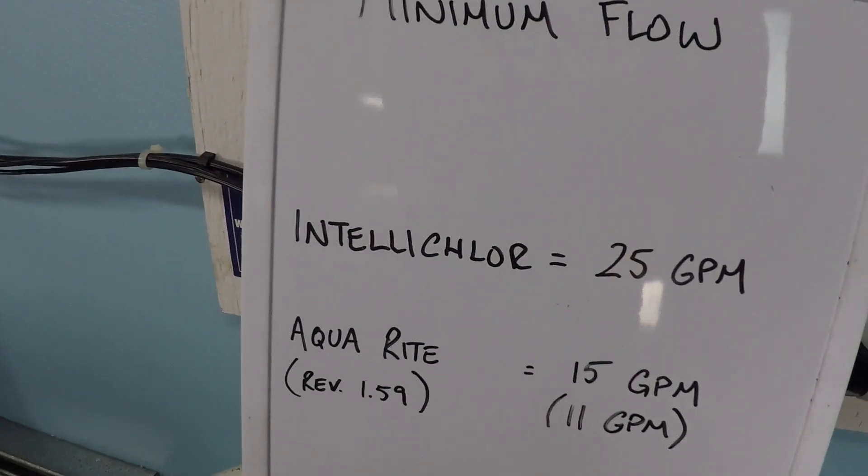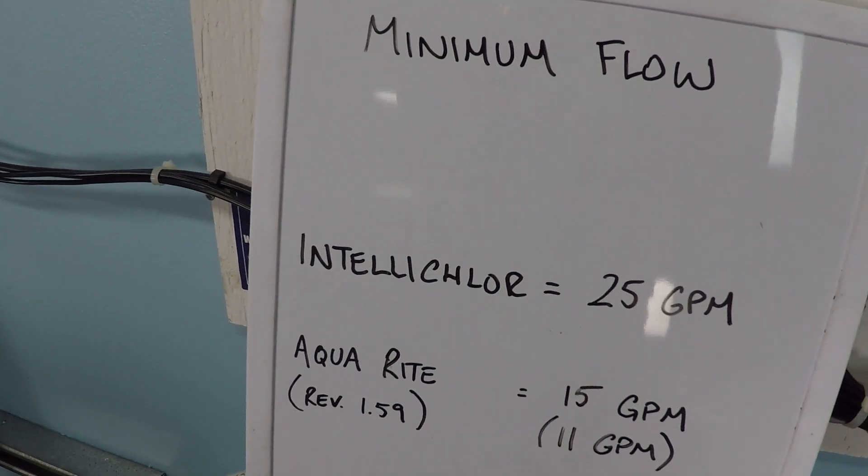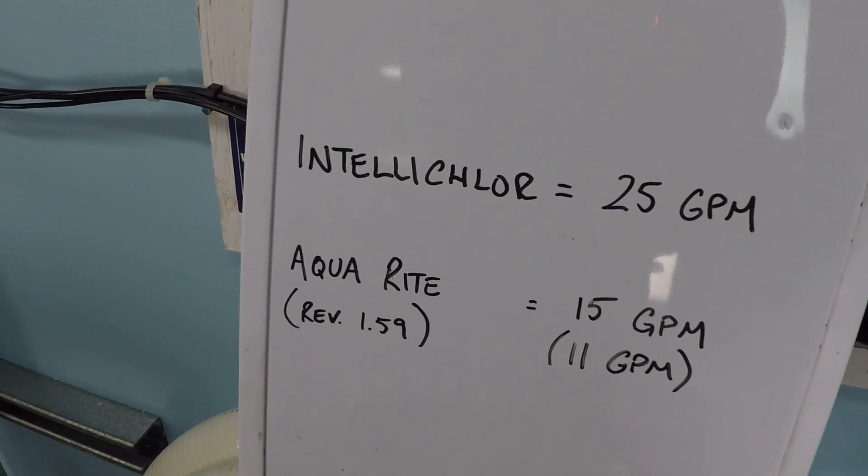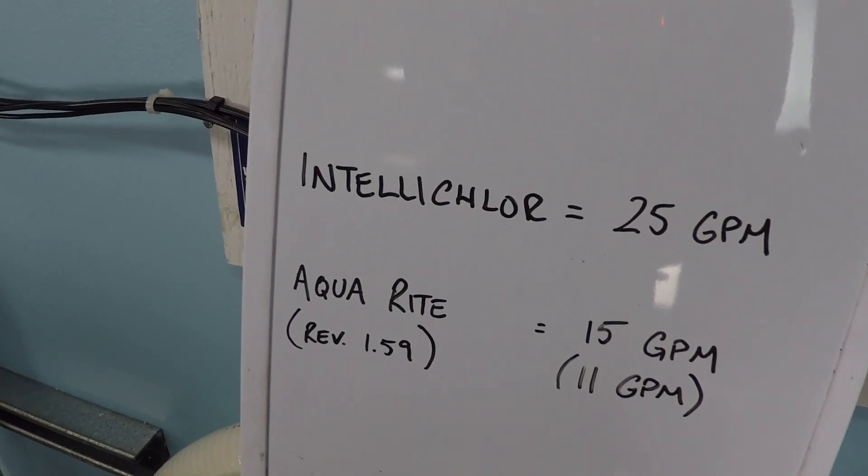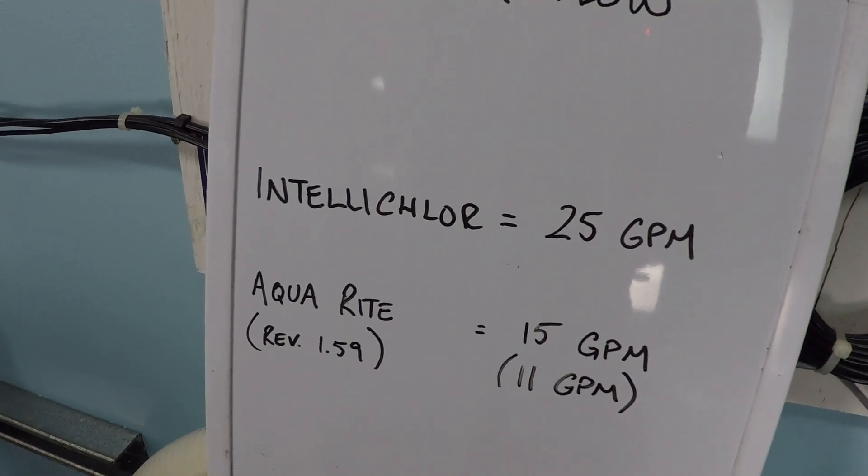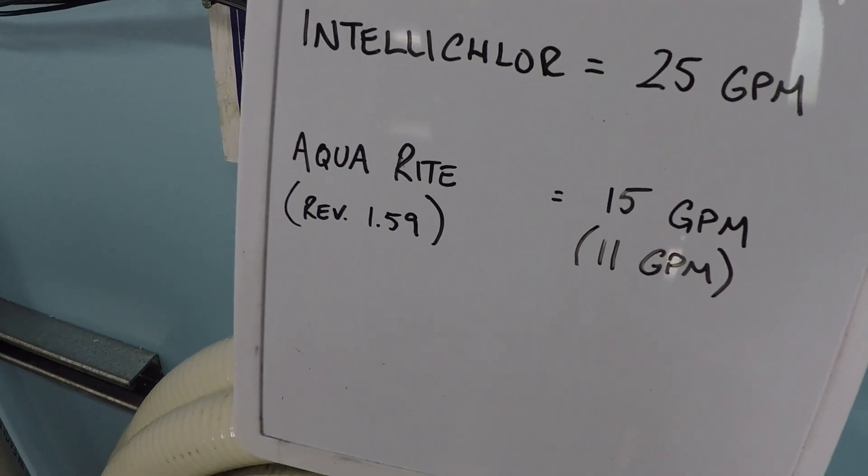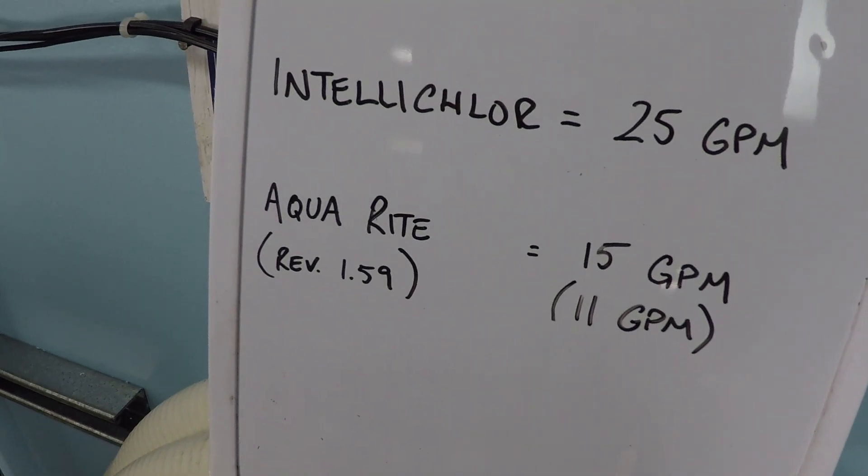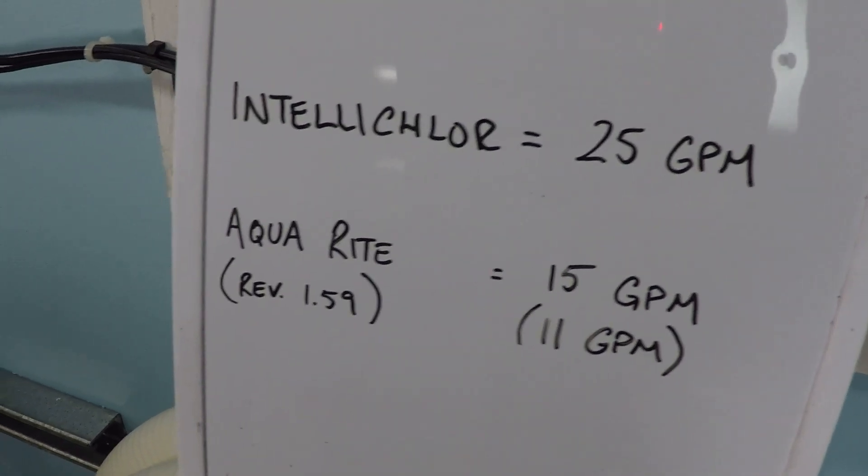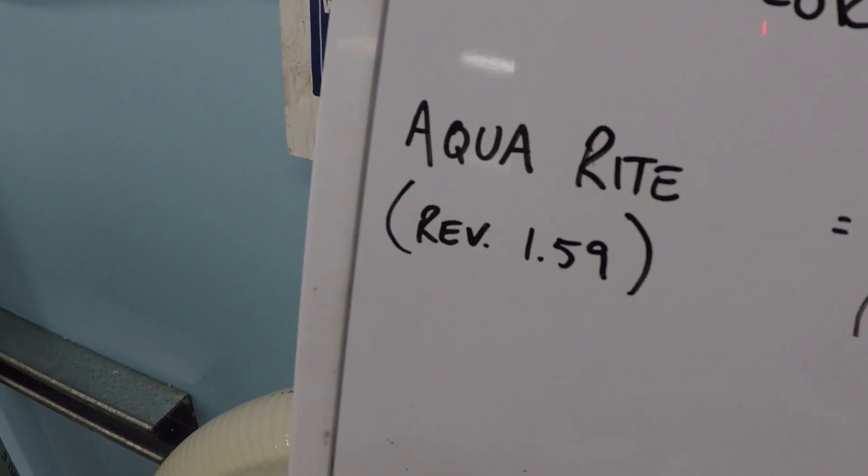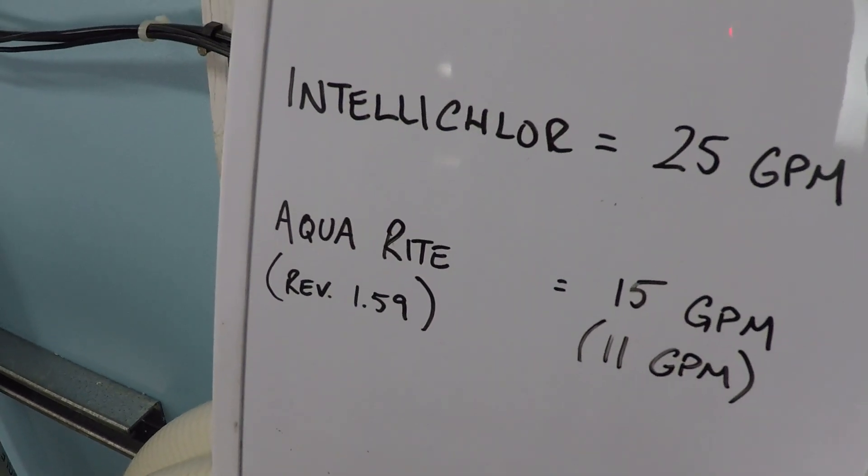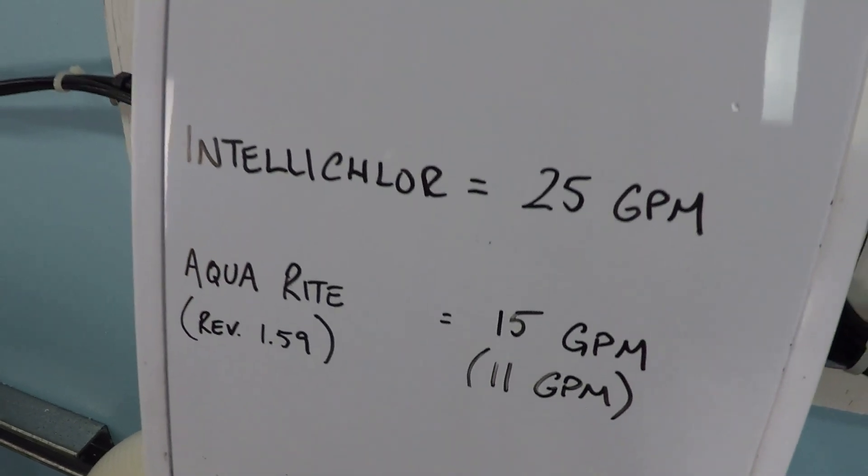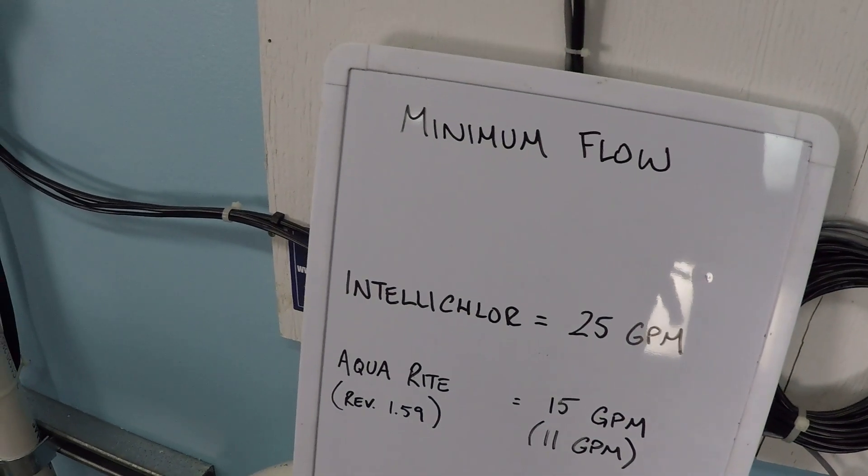So here's the real question: what is the minimum flow that you need for a salt system? Well, a couple of numbers I can find are the IntelliChlor from Pentair at a minimum of 25 gallons per minute. There are a couple of different reference points for Hayward systems. I was able to find references at 15 gallons per minute minimum, and specifically I found revision 1.59 for the AquaRite XL manual, and it shows 11 gallons per minute being the minimum.